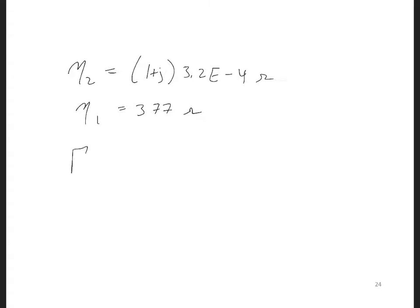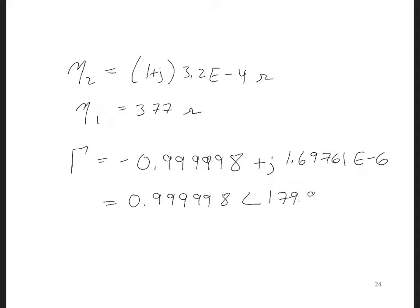So when we plug this in, we get a reflection coefficient of minus 0.999998 plus j, 1.69761e to the minus 6, which in polar form is 0.999998 at an angle of 179.9999 degrees.